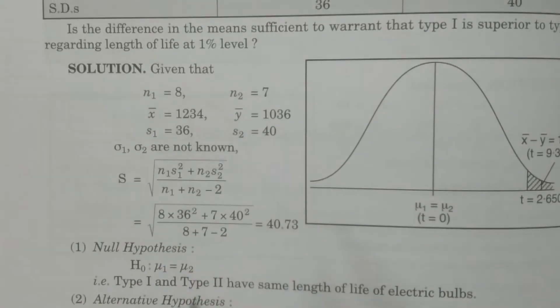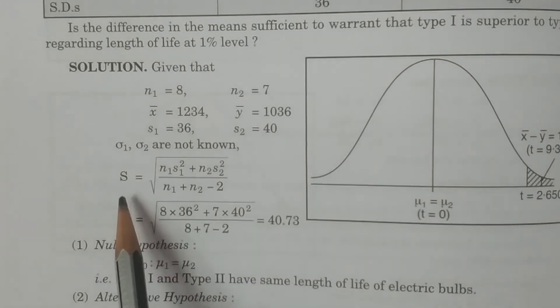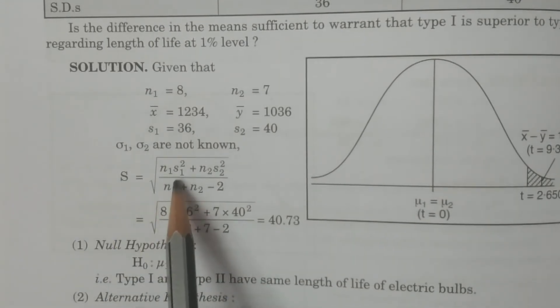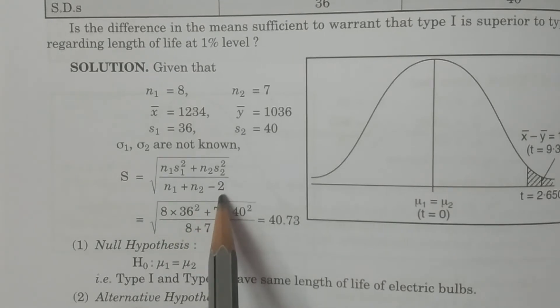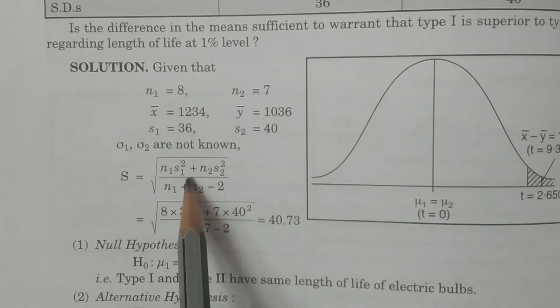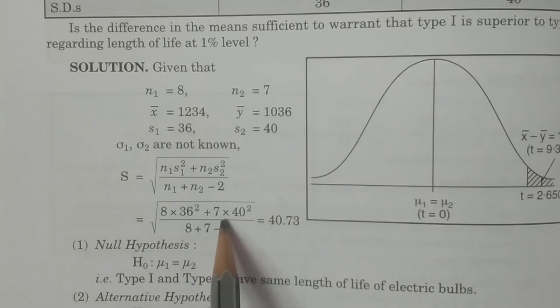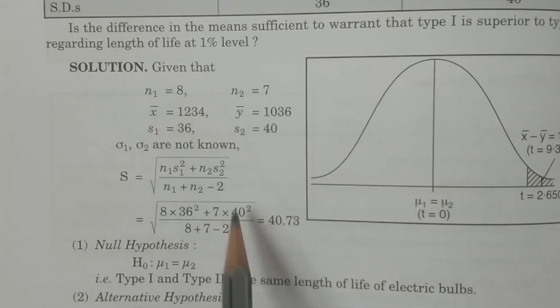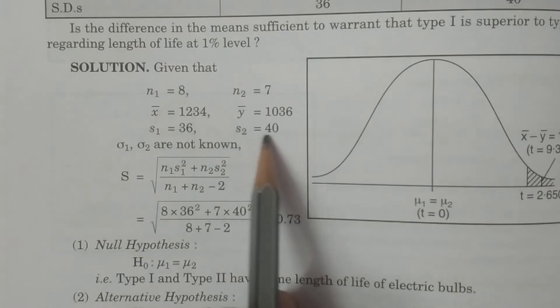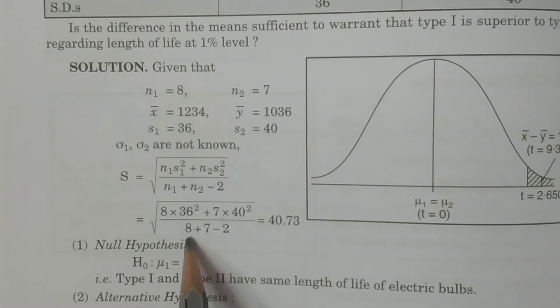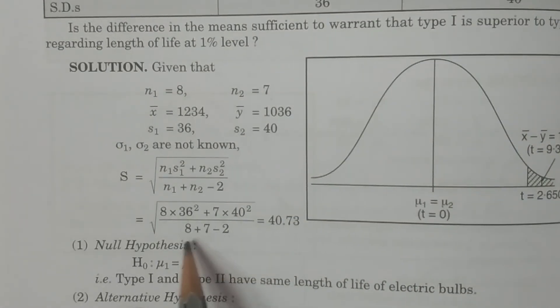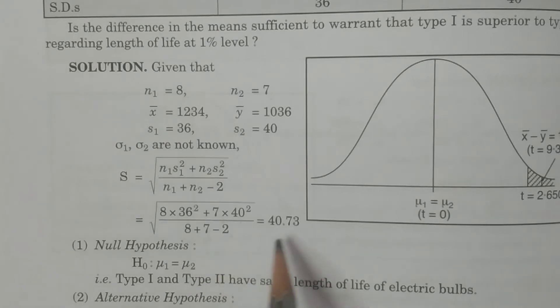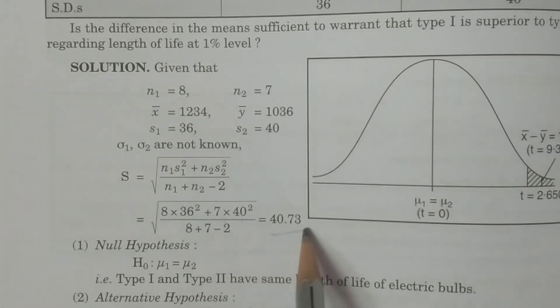We can calculate here: S equals square root of (n1·s1² + n2·s2²) divided by (n1 + n2 - 2). That's n1 is 8, s1 square is 36 squared plus 7, n2 is 7, s2 squared, 40 squared, divided by n1 plus n2 minus 2, 8 plus 7 minus 2. So some value 40.73.